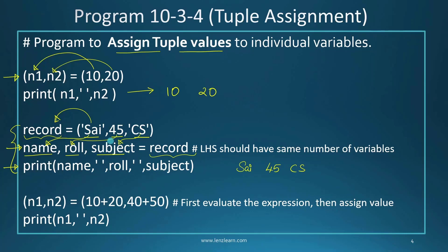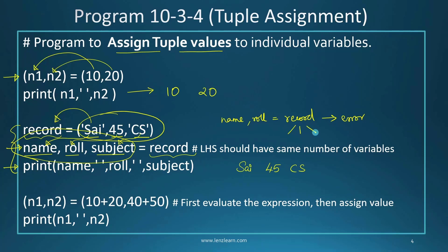When unpacking a tuple, be careful: the number of variables on the left side must exactly match the number of elements inside the tuple. If you write only two variables like name, role = record, Python will give an error because record has three values but there are only two variables to receive them. You must give an equal number of variable names separated by commas on the left side.